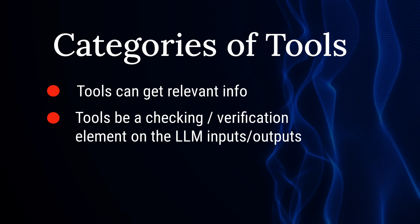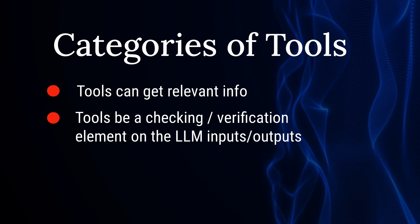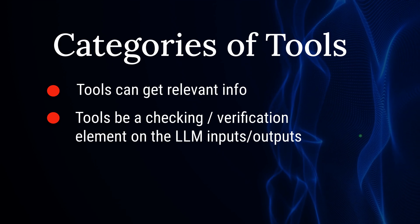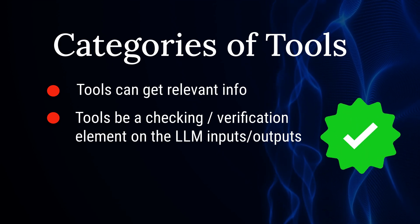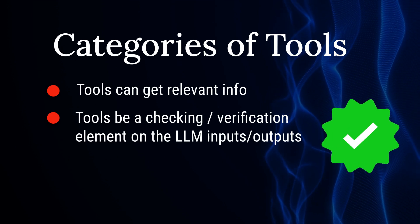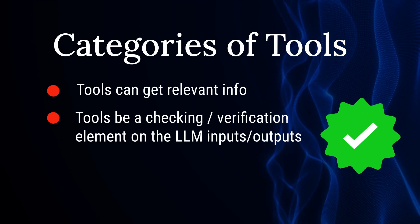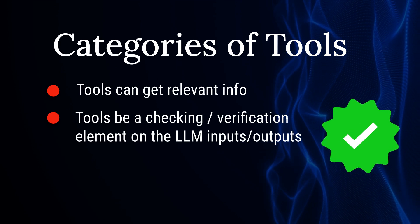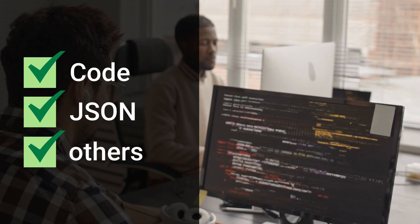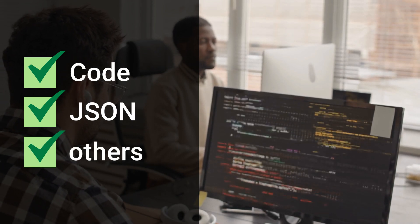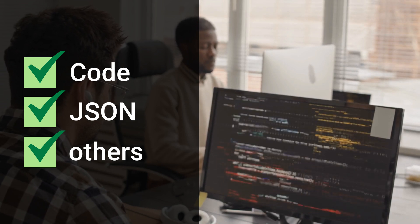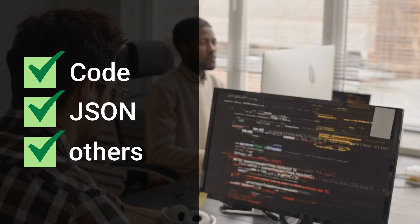The second category is using the tool as a checking and verification element on the LLM inputs or outputs. It can be on the LLM inputs — what's going to go into the LLM — or on the actual outputs generated by the LLM, where you have some kind of verification step. This is used quite a lot for checking code, checking JSON output, and also checking whether a user is actually giving useful info when putting something into an LLM.